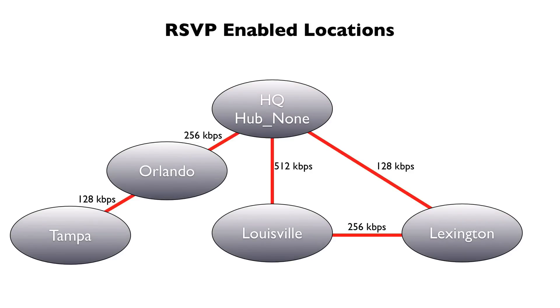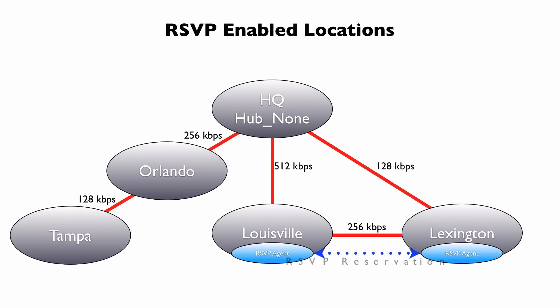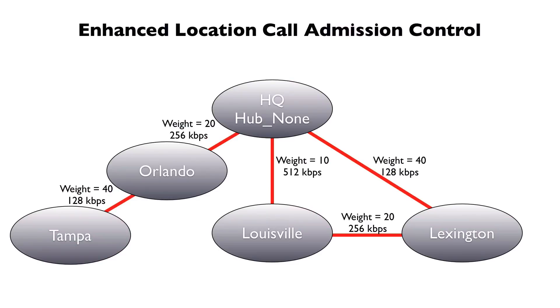Things got a lot better with RSVP-enabled locations. Take our example of Louisville and Lexington again — since there is that 256k link between those sites, with RSVP-enabled locations we could use that. We would have routers at each of these sites configured as RSVP agents, and when we placed a call between these two sites, Communications Manager would tell the routers to set up an RSVP reservation. If they could reserve enough bandwidth, the call could go through using that direct link. But that still didn't solve the problem of leaf sites like Tampa, which has to go through Orlando.